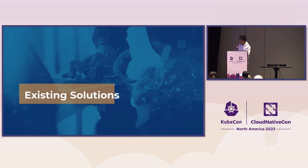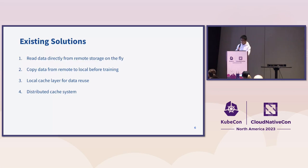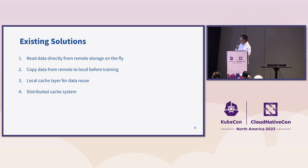Now we'll look at some of the existing solutions. The mainstream has two to four solutions. The first is to read data directly from remote storage on the fly. Second is to copy data from remote to local before training. The third is to use a local cache layer for data reuse. And lastly, we can use a distributed cache system.